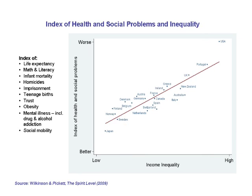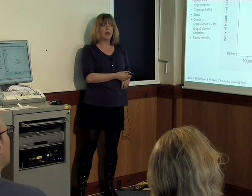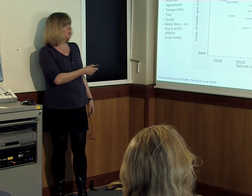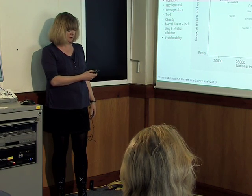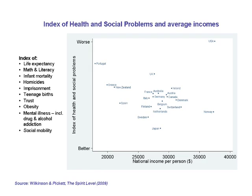You can see how close this relationship is — the correlation between the degree to which a country has high levels of health and social problems or is doing better. And here's the same index in relation to national income per person. We're on that flat part, that plateau — there's no relationship at all between our index of health and social problems and national income per person. So in relation to income inequality, there's a strong, close relationship; in relation to national income per person, there's nothing.